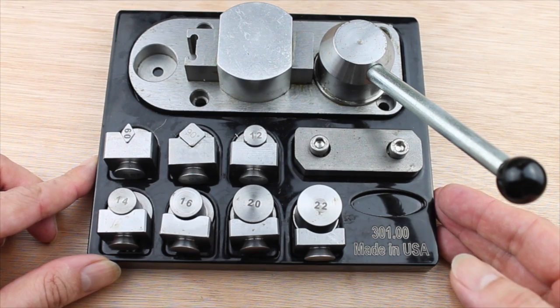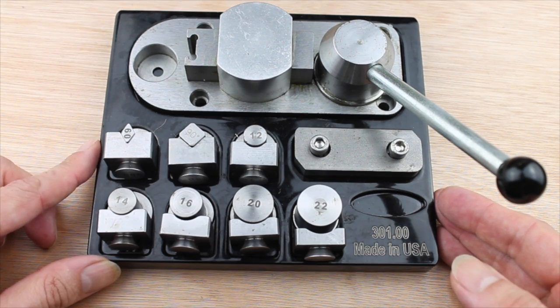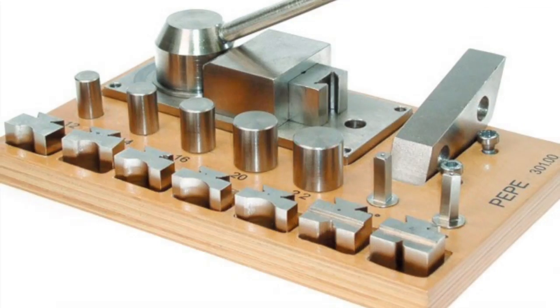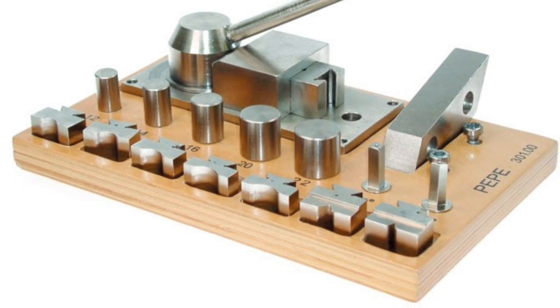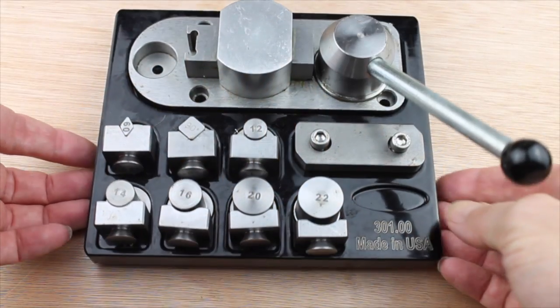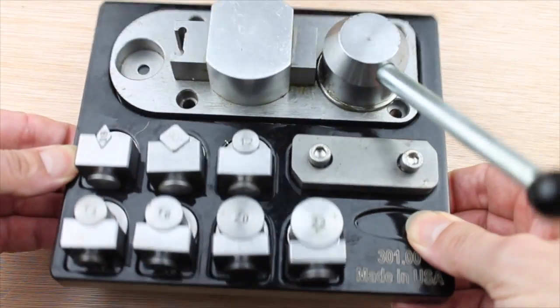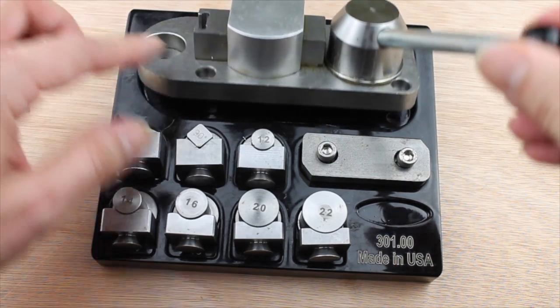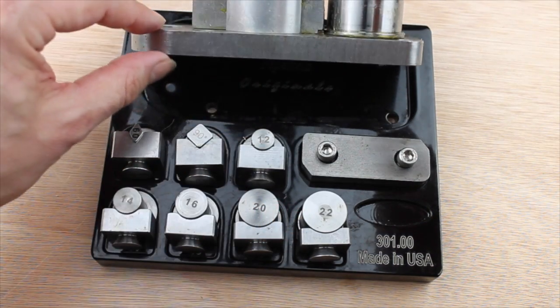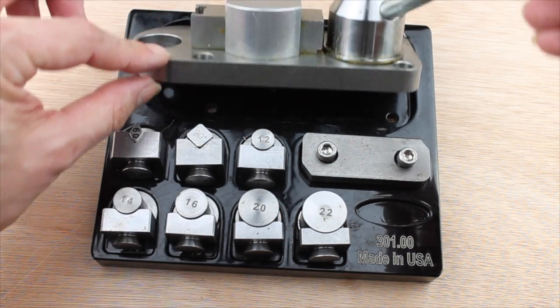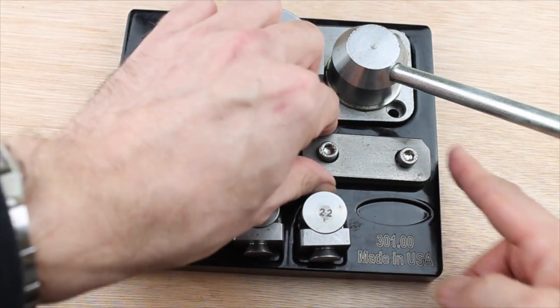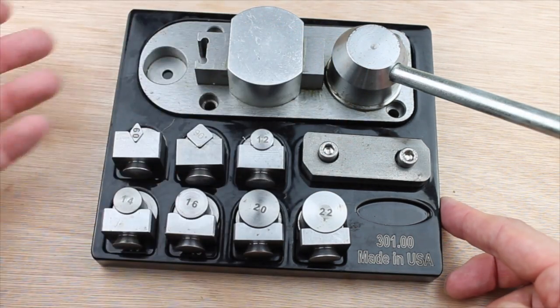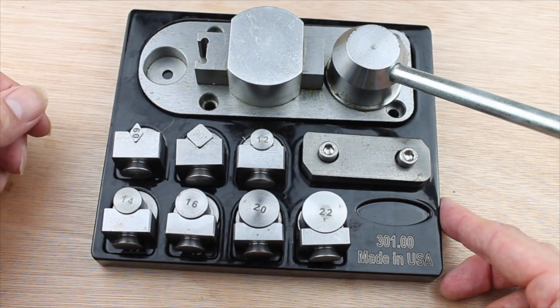So this is the Superior Ring Bending Tool, and this is the new upgraded version of the Super Ring Bending Tool that you might be familiar with. It comes with all the components that you need to get ready and working. Now if you pick it up, the first thing you'll notice is the immense weight of it - it really is solid and heavy. If you look at the side here, you can see the thickness, and that is solid steel, so it really is incredibly well built.